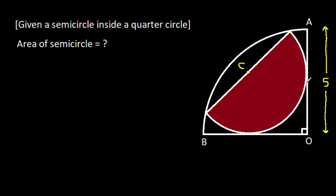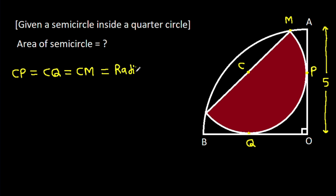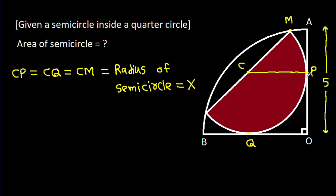Suppose this point is P, this point is Q, and this point is M. Then CP = CQ = CM, which is the radius of the semicircle. Suppose the radius is X, so CP = X, CQ = X, and CM = X.